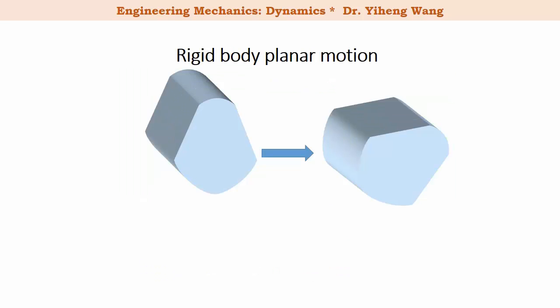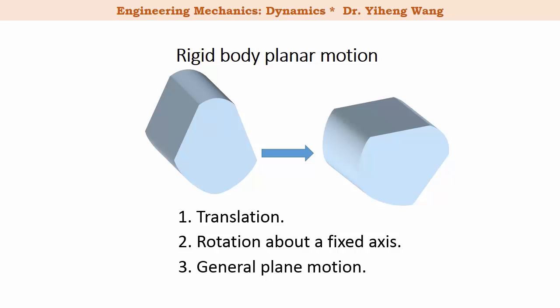There are three types of rigid body planar motion: translation, rotation about a fixed axis, and lastly the general plane motion, which is simply when the rigid body is undergoing both translation and rotation simultaneously.